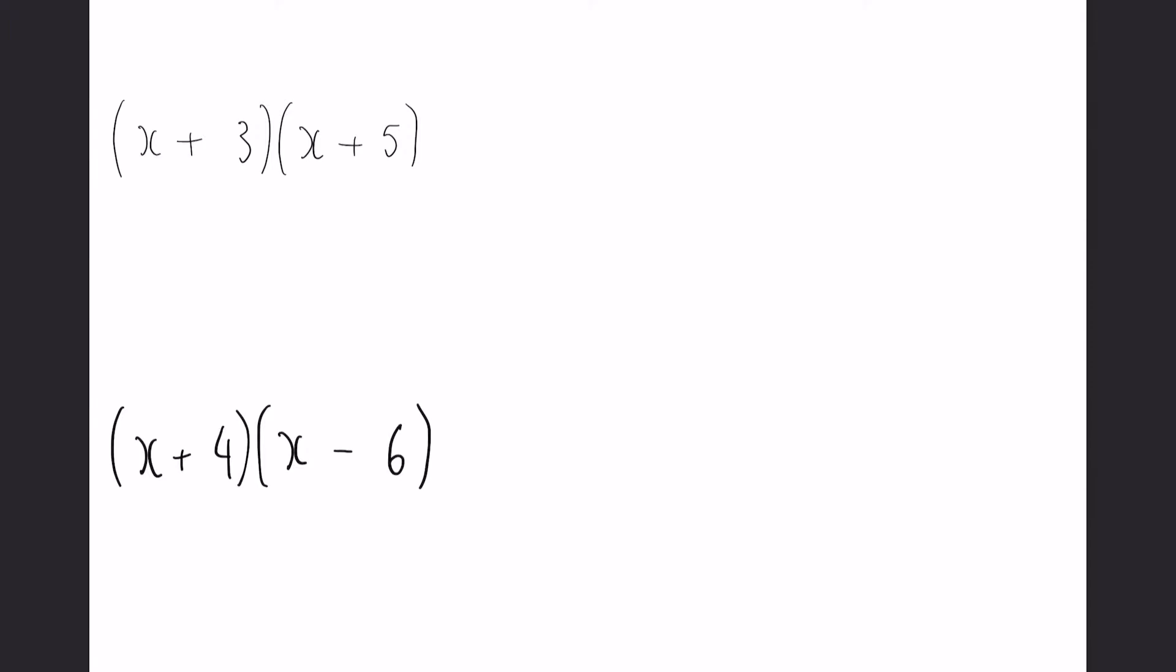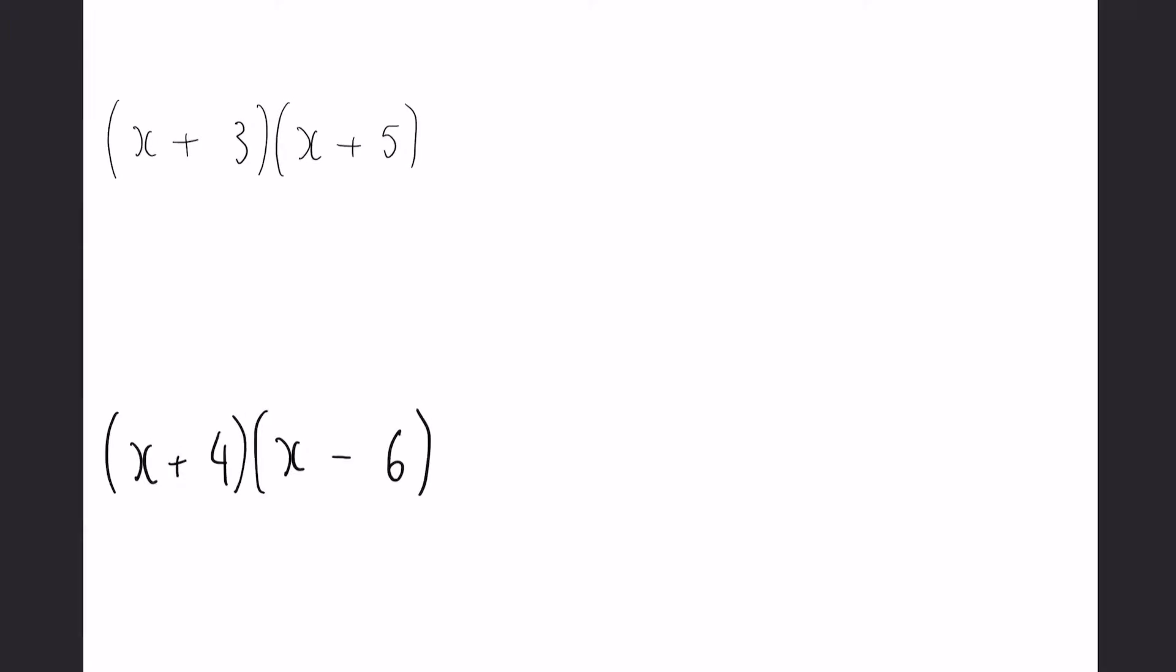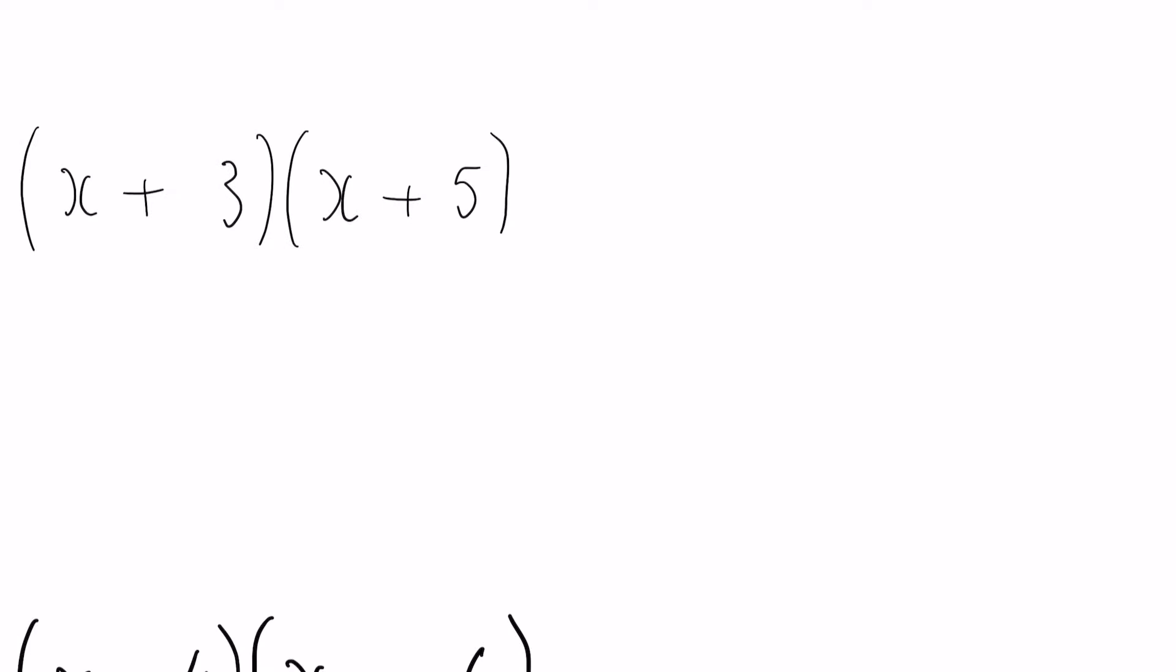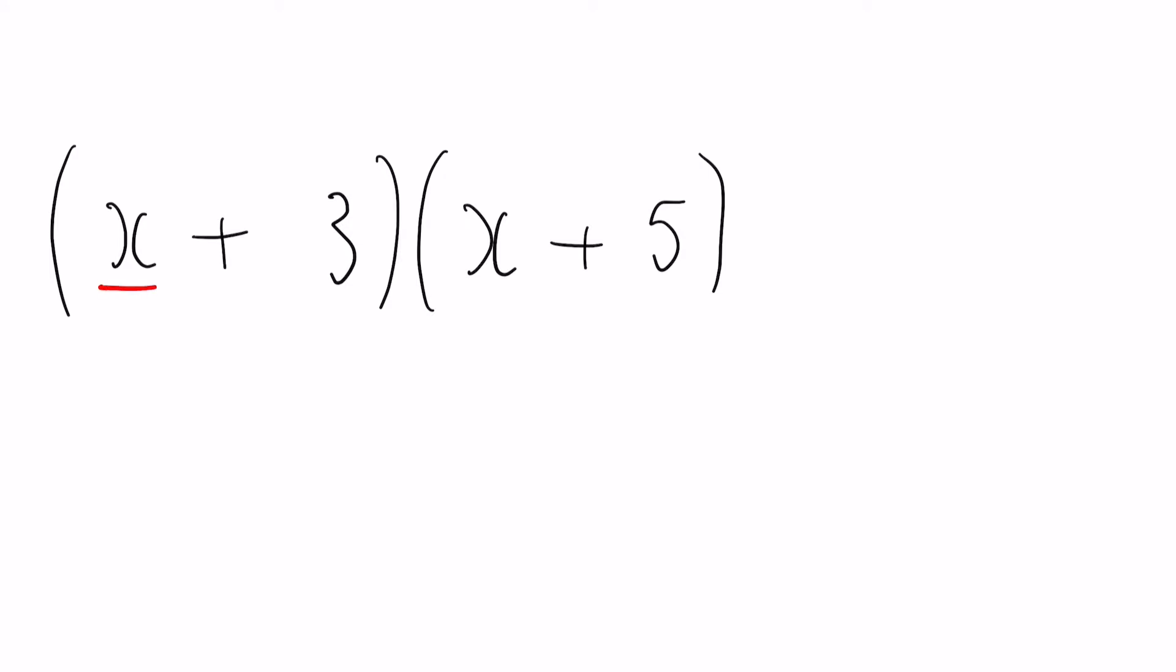Here we have three examples, each of which are slightly different scenarios you might get in your GCSE exams. First off, we have the basic one. We just have a singular X at the start of each bracket, and we have only positive numbers which makes it a lot easier.